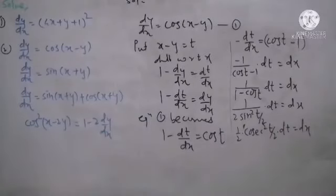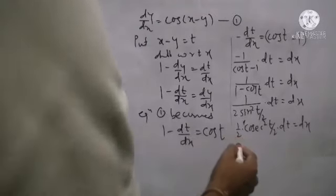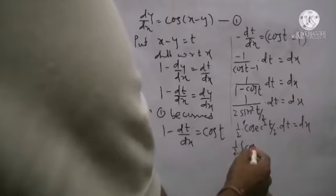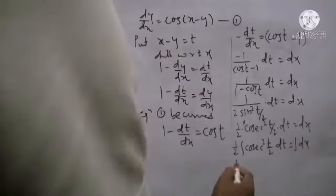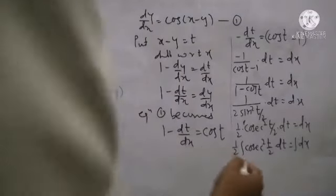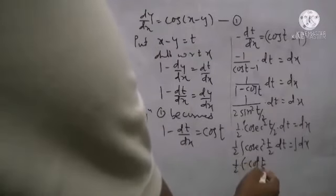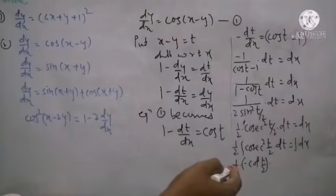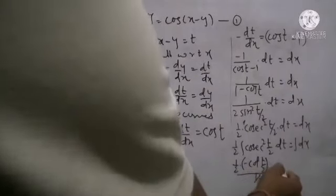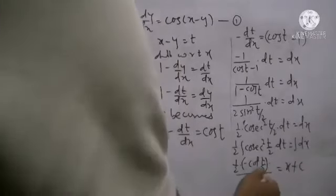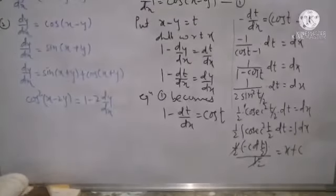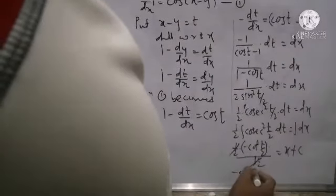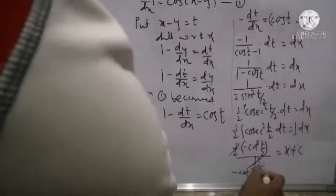Taking integration: one-half is a constant on the left hand side, so we integrate only cosec squared t by 2 into dt, and on the right hand side integration of dx. One-half remains as it is; cosec squared has integration minus cot, so we get minus cot of t by 2 as the coefficient of variable t is one-half, so this is divided by one-half. On the right hand side, integration of dx is x plus c. One-half cancels, and re-substituting the value of t as x minus y, the final answer is minus cot of x minus y divided by 2 equals x plus c.